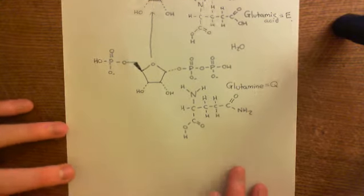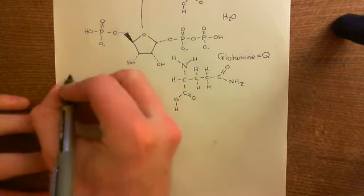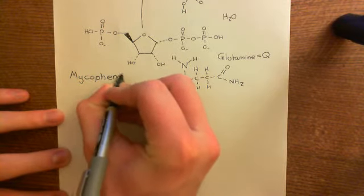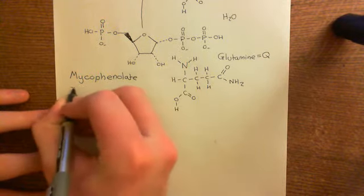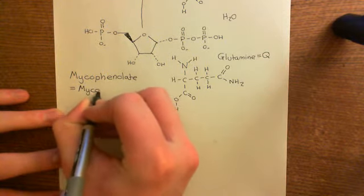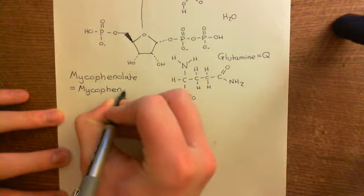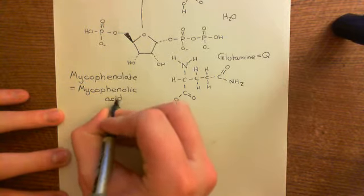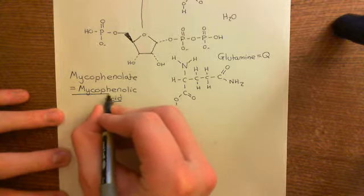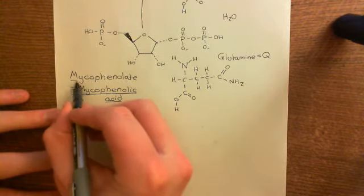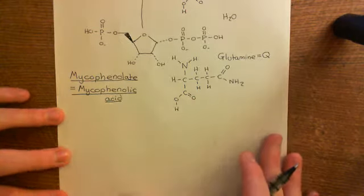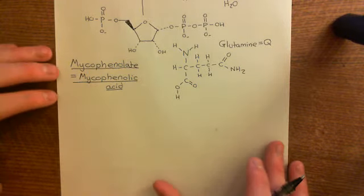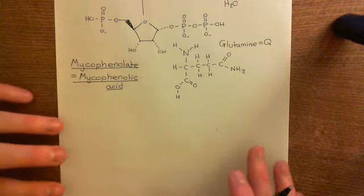We're now going to have a look at another drug, which is mycophenolate. Mycophenolate is also called mycophenolic acid. The difference between mycophenolate and mycophenolic acid is the same as between glutamate and glutamic acid — mycophenolic acid is the molecule where you still have the proton attached, and mycophenolate is the conjugate base where you've lost the proton. So in any solution where you have mycophenolic acid, you'll also have mycophenolate present, which is why the two can be used interchangeably.